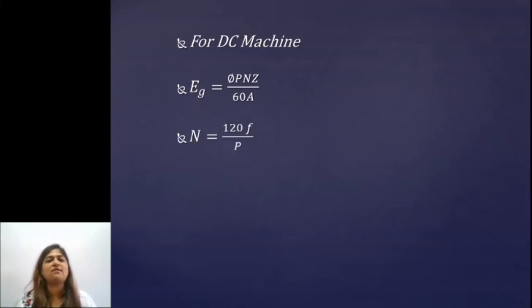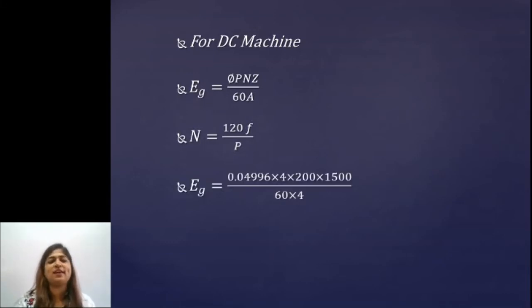We'll substitute all the values. Let's find out value of speed N equals 120 F by P, we get it as 1500. Substitute in Eg and you will get the value of Eg as 749.4 volts. Check with your answer whether you're getting the same value or not. So we took another type of problem which can be asked.